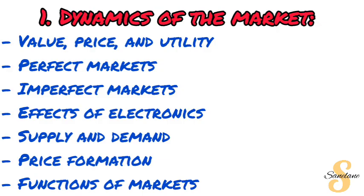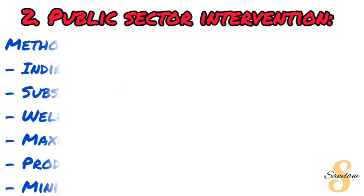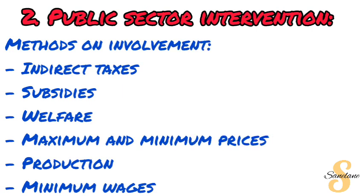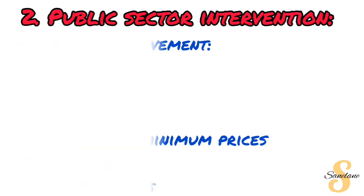Under dynamics of markets you also cover price formation and the functions of the market. The second topic under microeconomics is public sector intervention, which covers the methods of intervention: direct taxes, subsidies, welfare, maximum and minimum prices and production, as well as minimum wages. Note that the public sector simply refers to the government, so this is about how the government intervenes in markets.